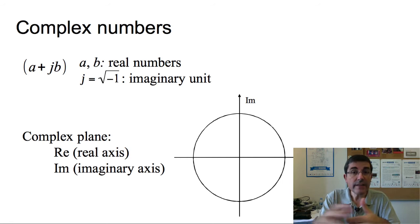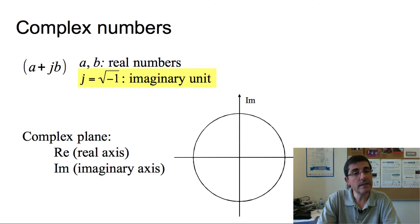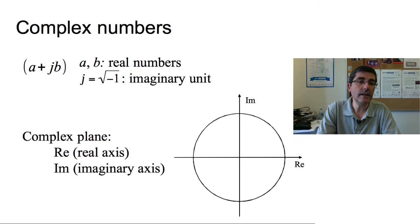So another needed basic concept is the one of complex numbers, which are numbers that are built of two parts. One part is what we call real part, and the other is the imaginary part. So a would be the real part, and b would be the imaginary part. In order to represent the imaginary part, we multiply by j, which is the imaginary unit, the square root of minus one.